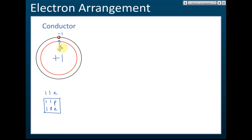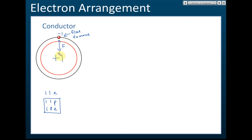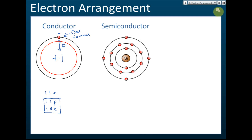Because the core charge is only +1 attracting −1, this attraction force is very weak. Since the force is weak, the valence electron can leave the shell easily — it is free to move. A free electron can be a charge carrier and conduct electricity. That's why atoms with one, two, or three valence electrons are conductors.